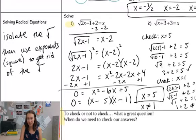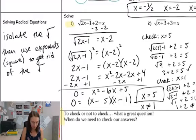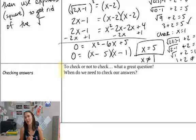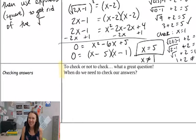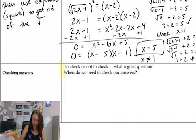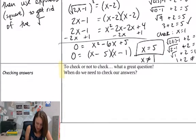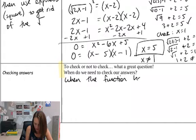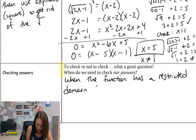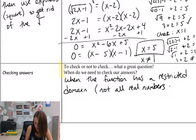So always check your answers. I want to see you check your answers just like I showed here. Don't erase your answers that don't work — just show me that they don't work by putting a little slash through your equal sign. Here's how to know when to check your answers: you need to check your answers when the function has a restricted domain — so not all real numbers in the domain.